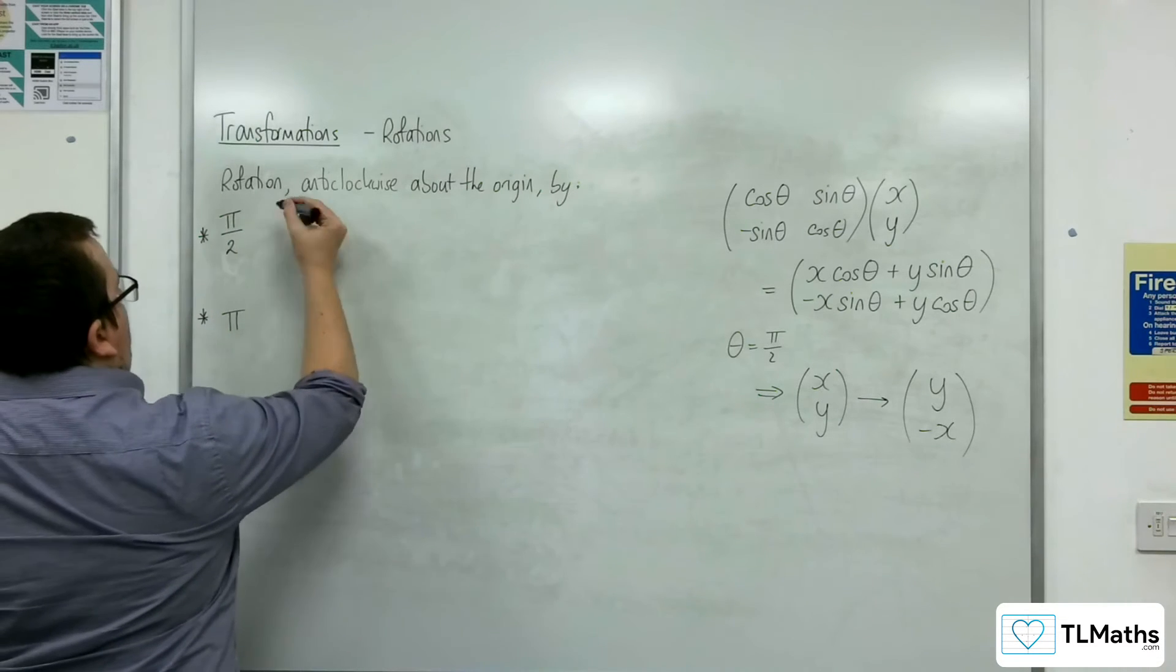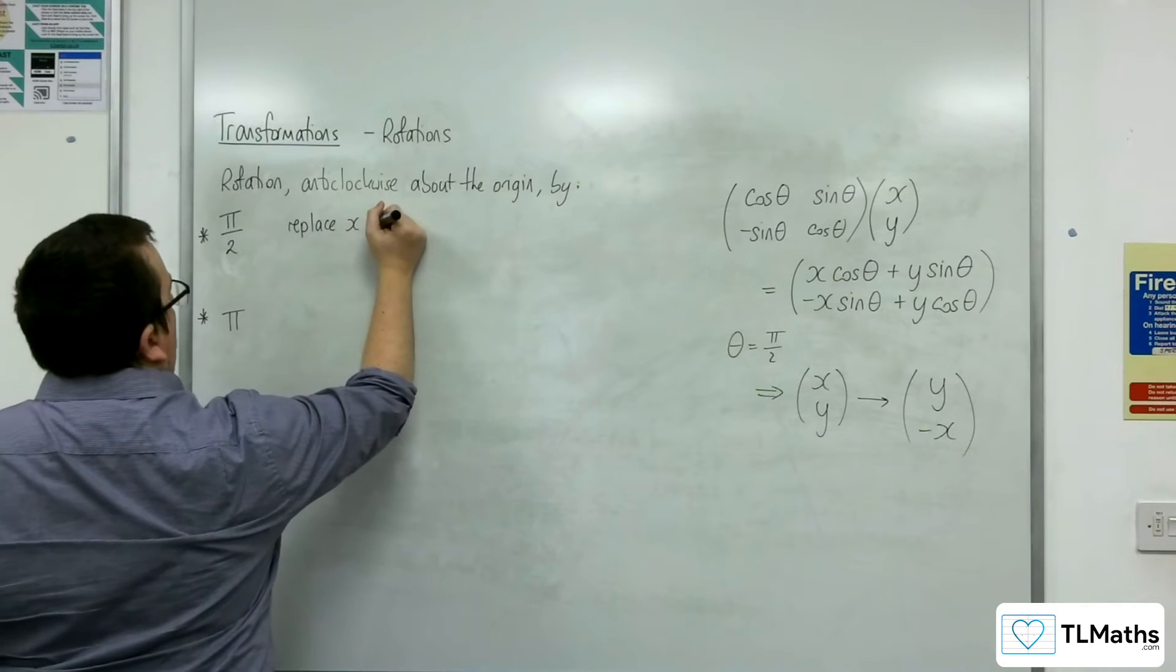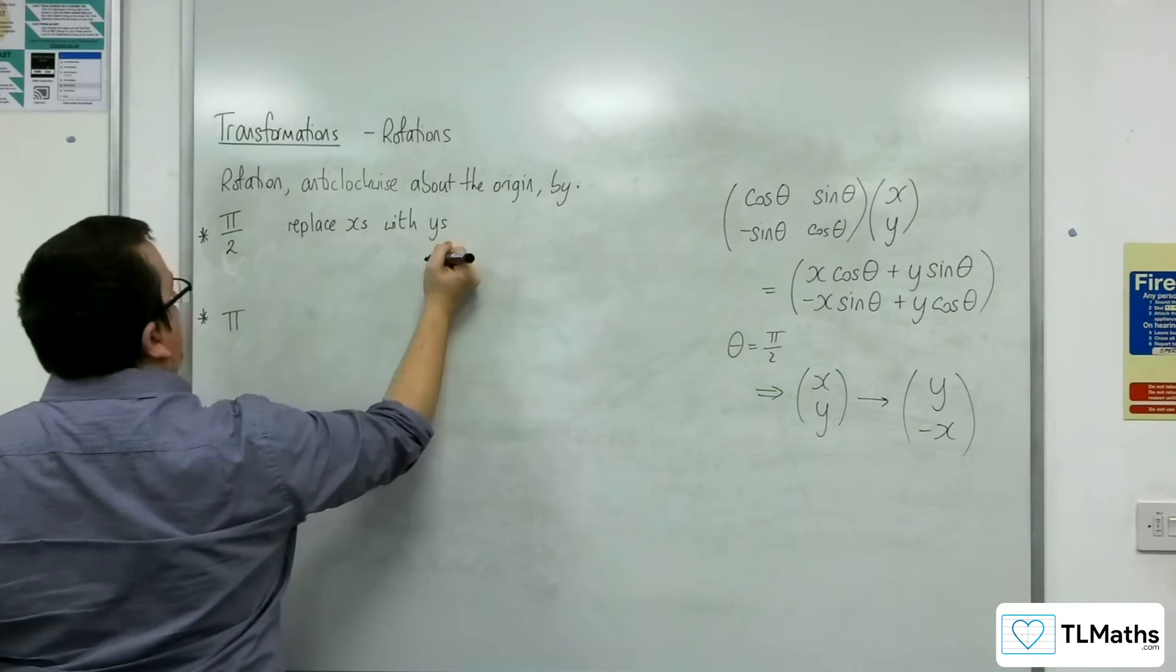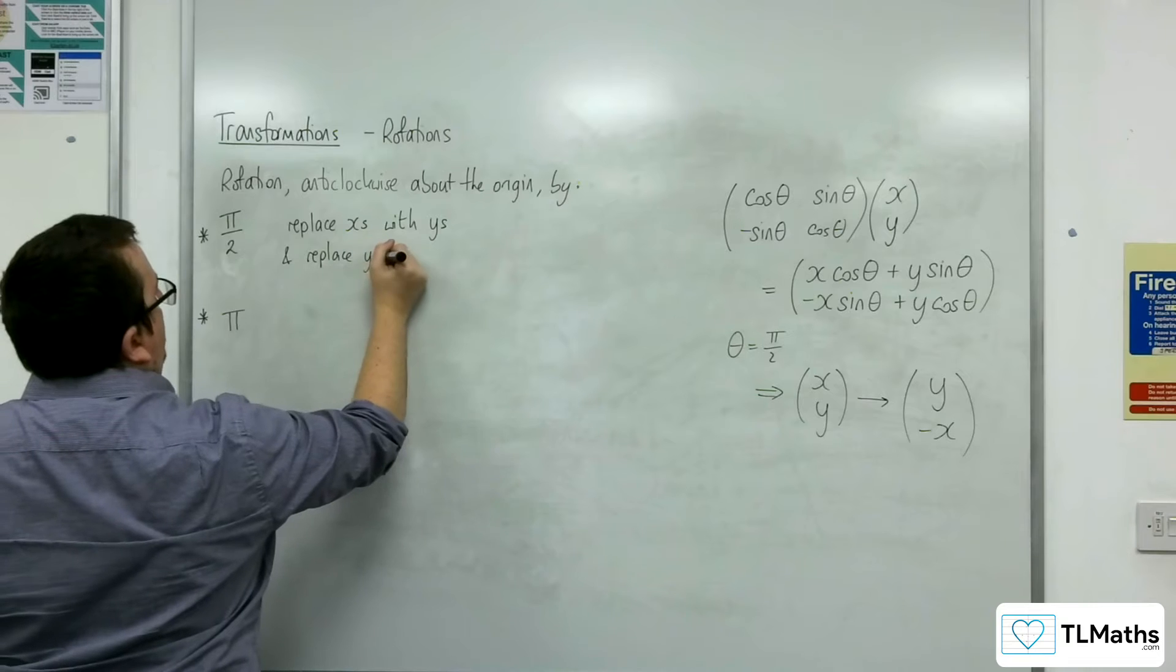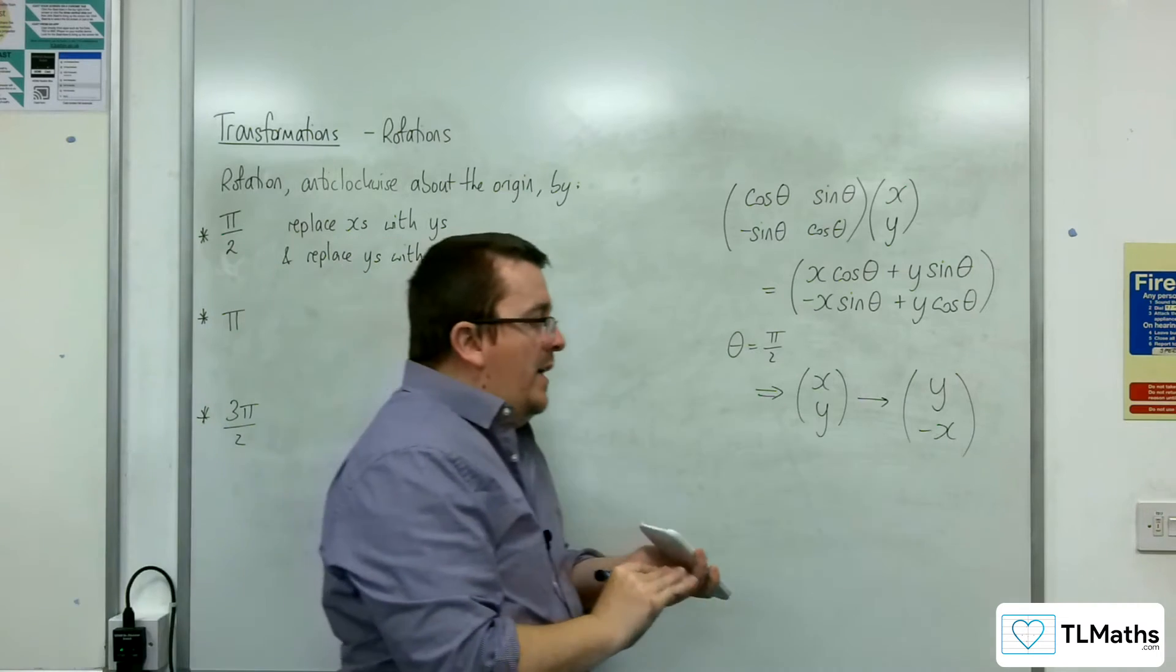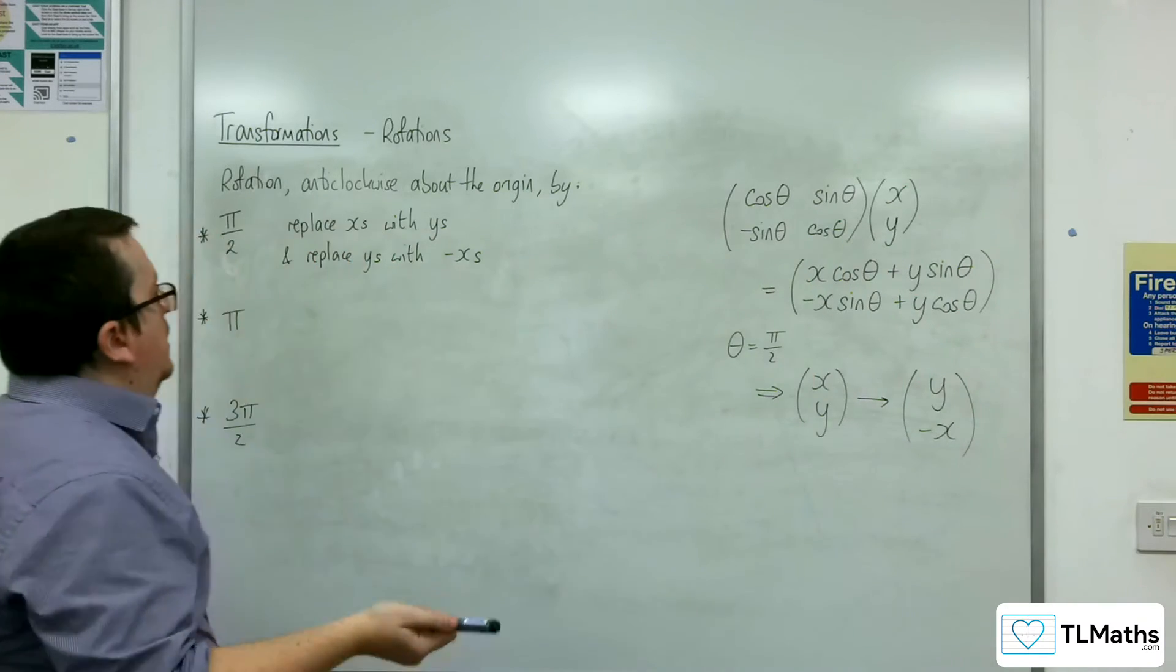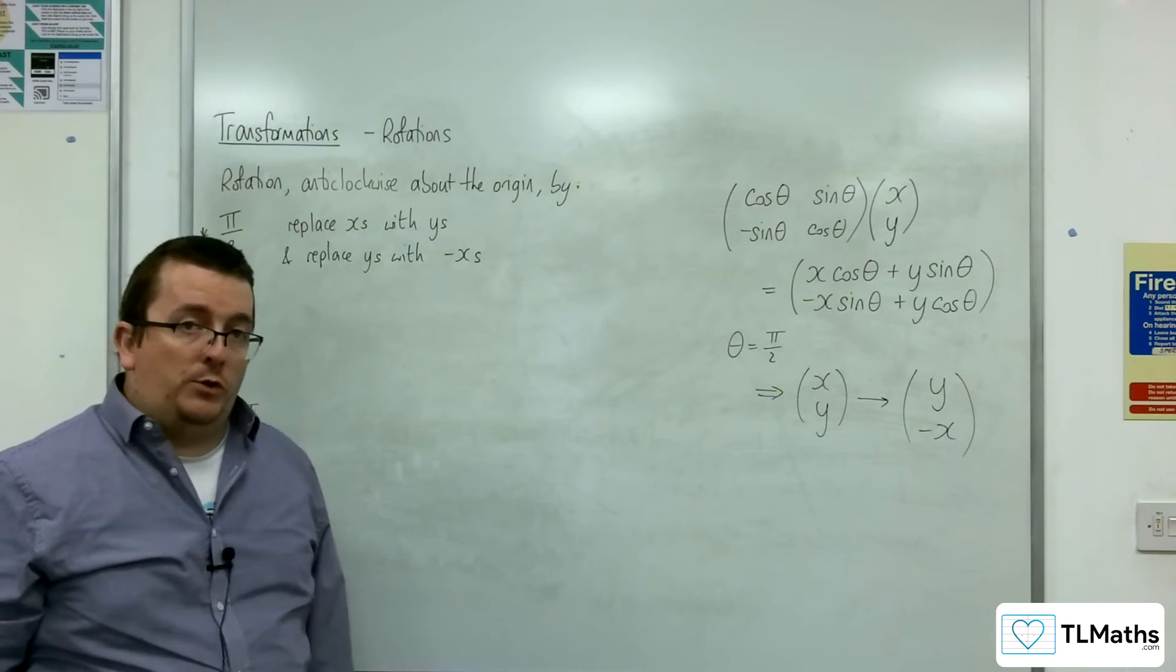So we need to replace x's with y's, and replace y's with minus x's. And that will enable you to rotate your graph anticlockwise about the origin by the angle pi over 2.